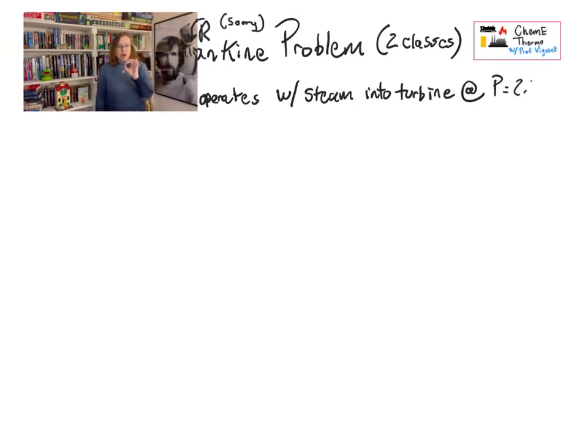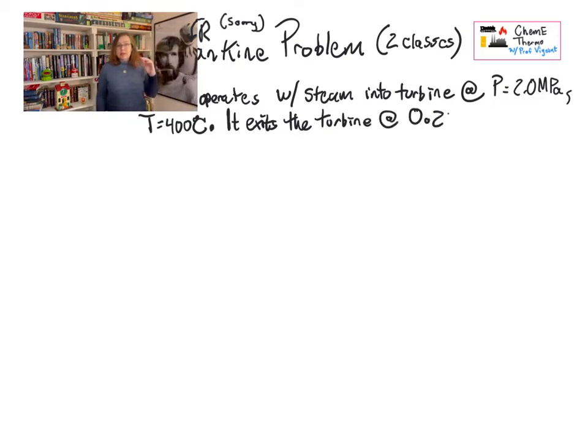So you have a Rankine cycle, and it is operating with steam, as we expect. And the steam coming into our turbine is at a pressure of 2 megapascals, and it is at a temperature of 400 degrees Celsius. So that is the conditions at point 2, if you go look at the graph we just created. Then that steam is going to exit the unit operation that does the pressure change between 2 and 3, and it's going to come out at 0.2 megapascals. And believe it or not, this is all we need to actually specify to be able to solve most of this problem.